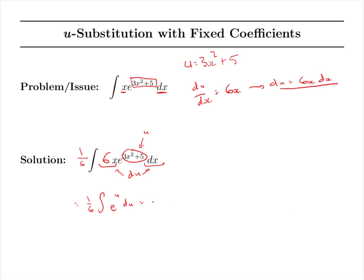Antiderivatives then go pretty easily once we're substituted out, so our antiderivative of e to the u is just e to the u. So we still have this coefficient of 1 sixth, e to the u plus c. And then we can switch it all back to our x variable, and so we've got 1 sixth e to the 3x squared plus 5 plus c.